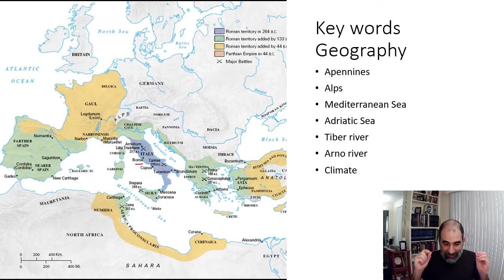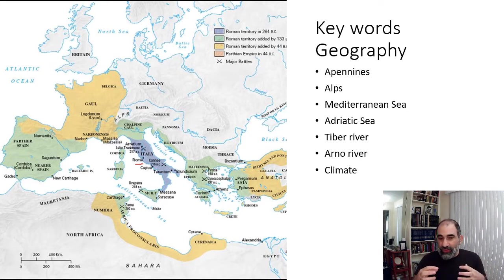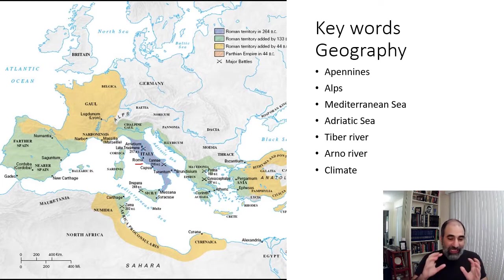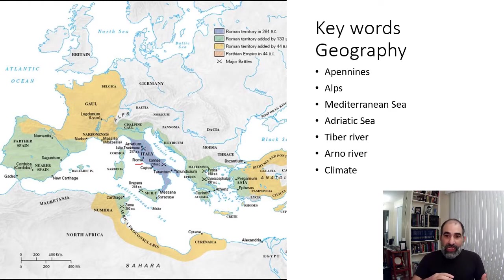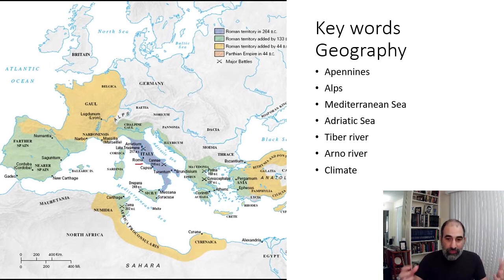When Rome starts, it's literally just a tiny dot on a map — not even all of Rome, just a little hill, as we're going to talk about in our next lecture. There are many geographical features that are going to help Rome thrive. It's not enough just to know the geography; you need to know how the geography impacted it. There are two mountains, two seas, and two rivers I want you to know about. The first mountains are known as the Apennines and the Alps.